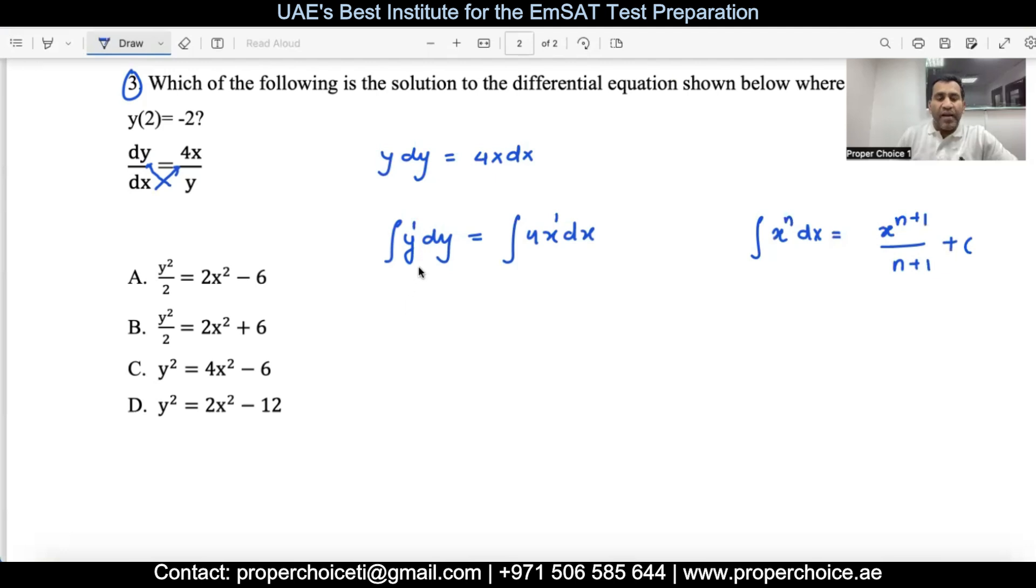The integral of y is y²/2 because y^(1+1)/(1+1) = y²/2. The integral of 4x is 4x²/2 + c. Simplifying: y²/2 = 2x² + c. Whatever answer I'm going to get should be like y²/2 = 2x² + c. I can get rid of options C and D. The answer may be either A or B, as I don't know whether the value of c is positive or negative.